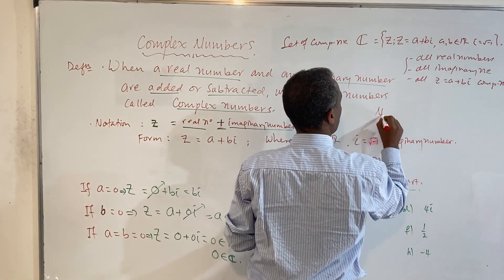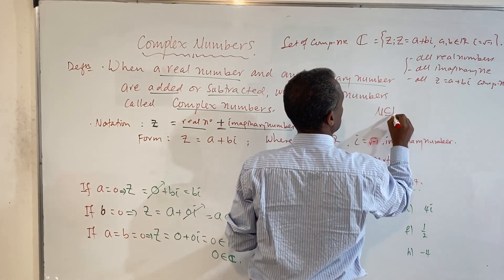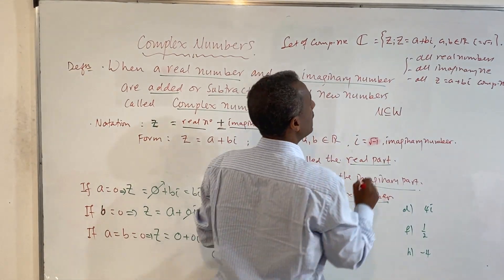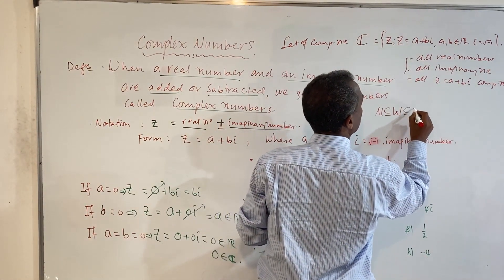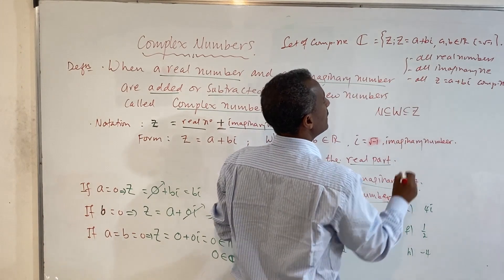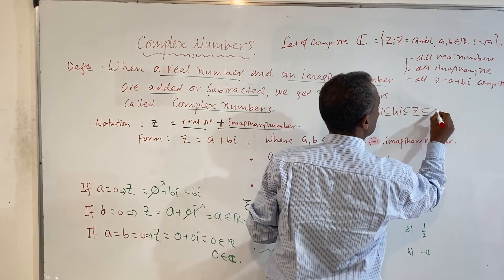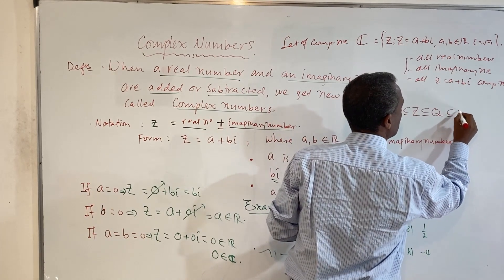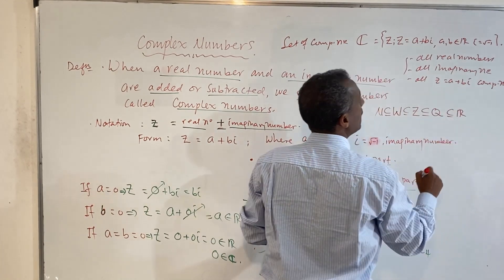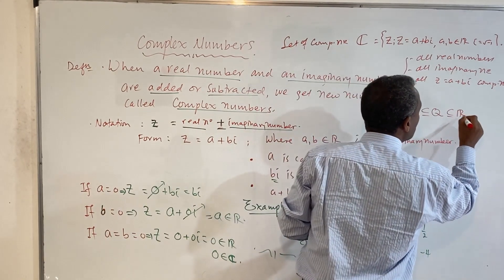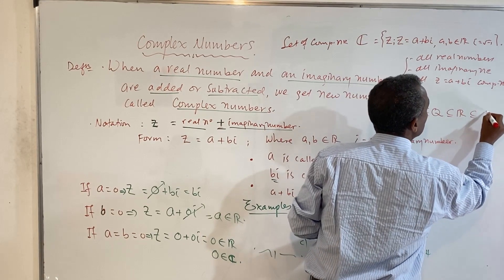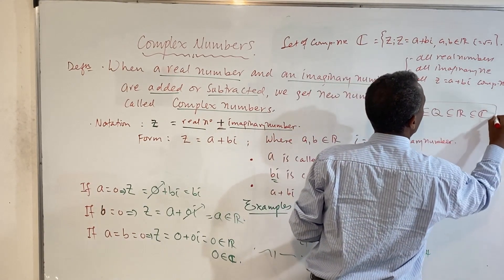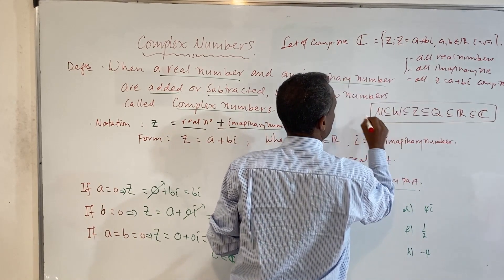The set of natural numbers is a subset of the set of whole numbers. The set of whole numbers is contained in the integers Z. The integers are also in the set of rational numbers. The rational numbers are also in the set of real numbers, and the set of real numbers is a subset of the set of complex numbers. This is the relationship among the sets of numbers.